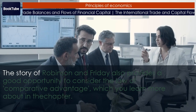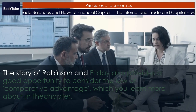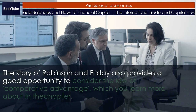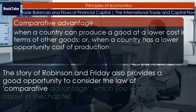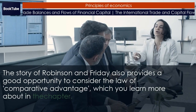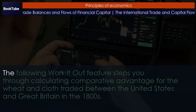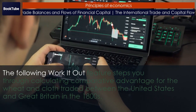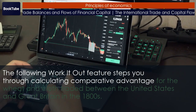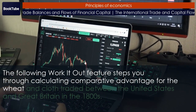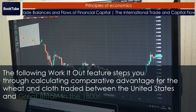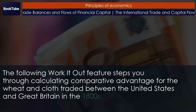The story of Robinson and Friday also provides a good opportunity to consider the law of comparative advantage, which you learn more about in the chapter. The following Work It Out feature steps you through calculating comparative advantage for the wheat and cloth traded between the United States and Great Britain in the 1800s.